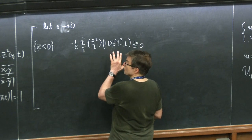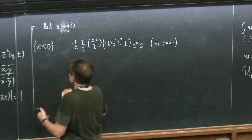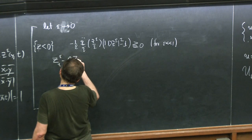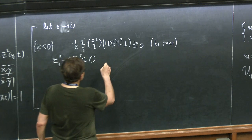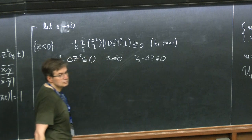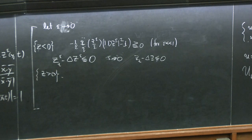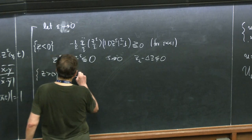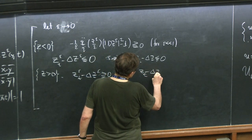Therefore, letting epsilon to zero, I get this inequality. In the set where z is positive, I still have this negative. But now this coefficient is positive. So I get Z epsilon_t minus Laplacian Z epsilon greater than or equal to zero. And after I let epsilon go to zero, Z_t minus Laplacian Z is greater than or equal to zero.